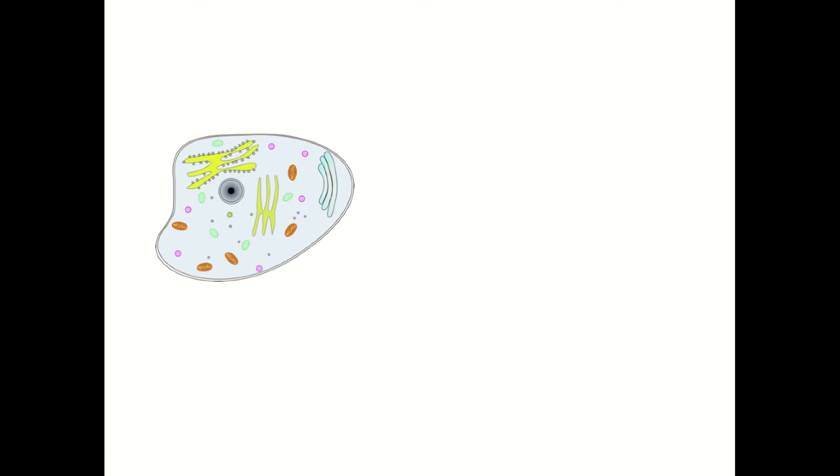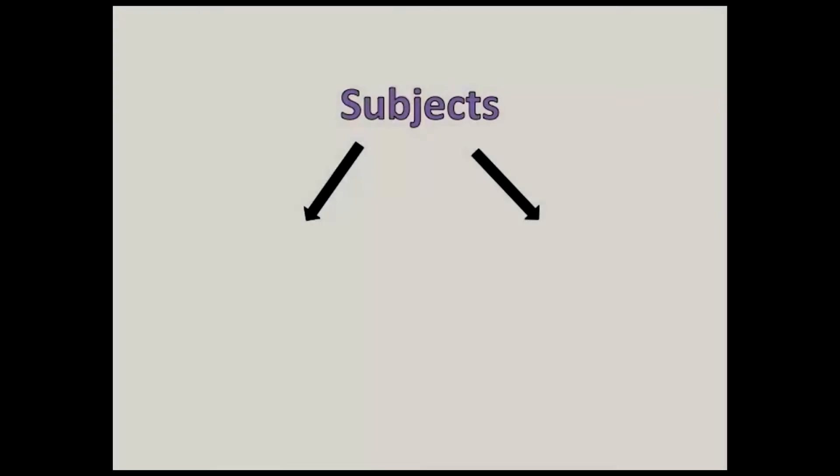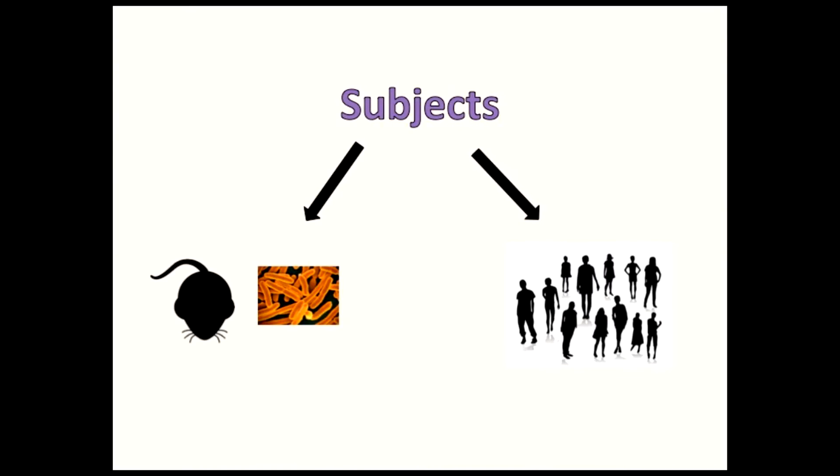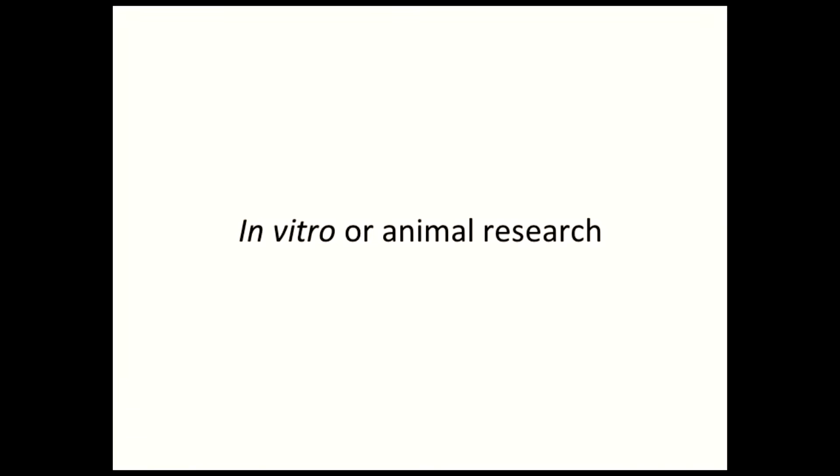Be careful, because human cells can sometimes be used as subjects of research. Humans are made of cells, but cells themselves are not whole human beings. If something besides humans are used as subjects, then the study falls into the category of in vitro or animal research.